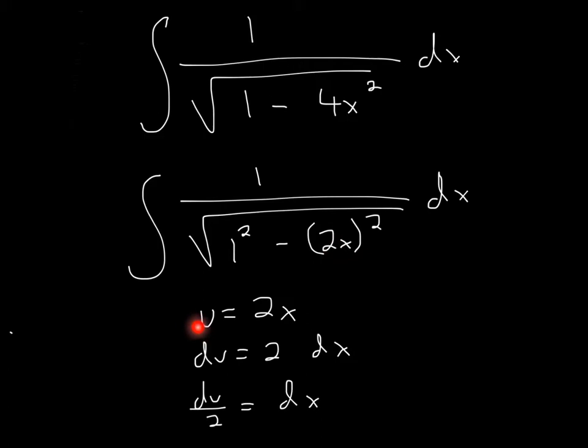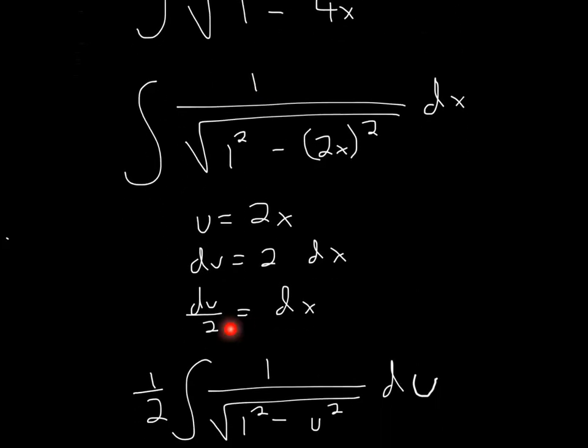So I want to get rid of this 2x, so I'll say that u is equal to 2x. And this can be any letter, but I chose u. So the derivative of u will be du, and the derivative of 2x will be 2 dx. Is there a 2 on the top? No, there's only a 1. So what we can do is just divide by 2, and we'll have du over 2 is equal to dx.